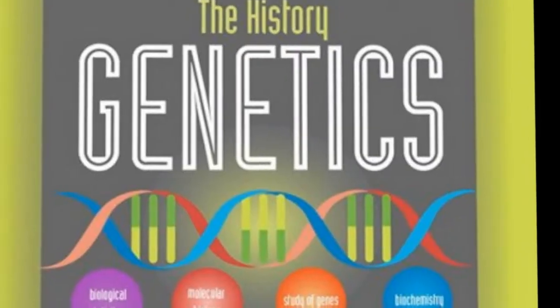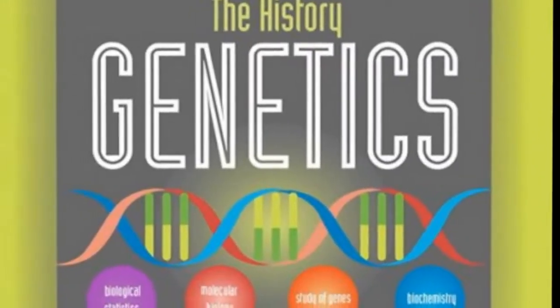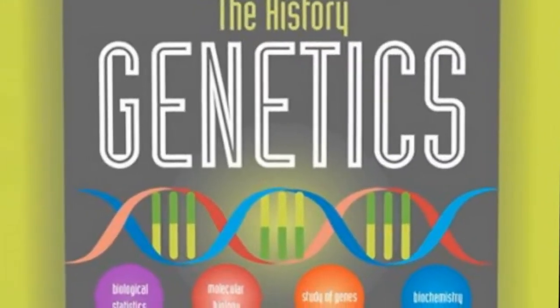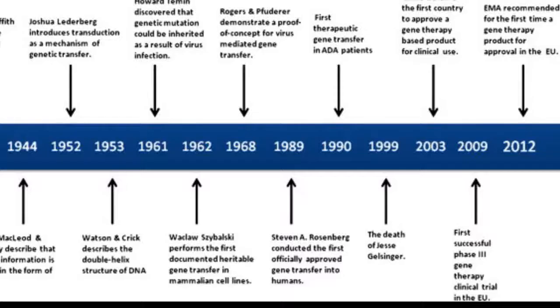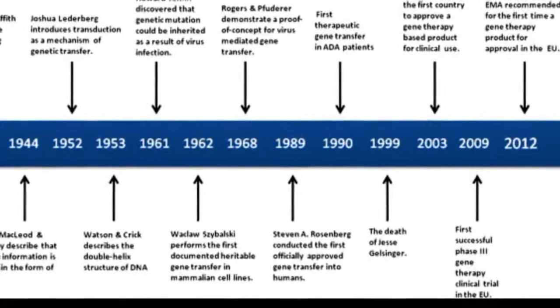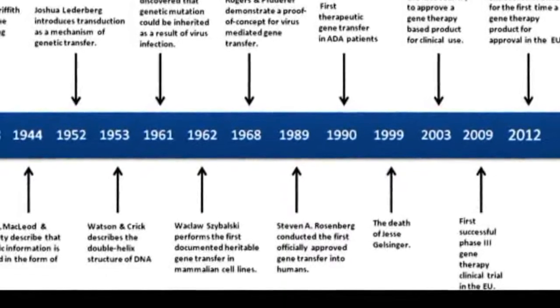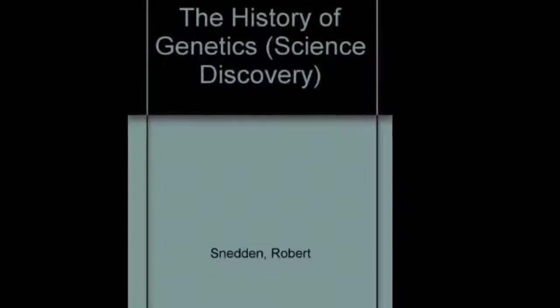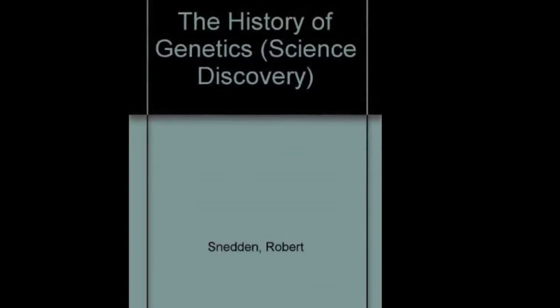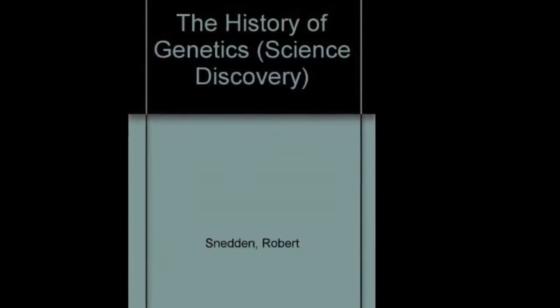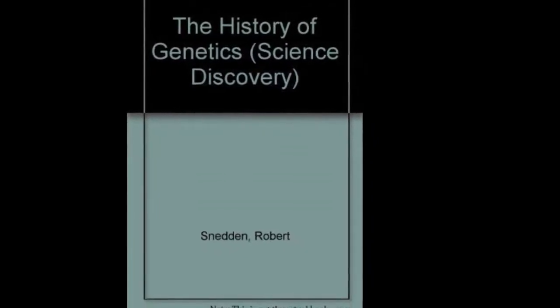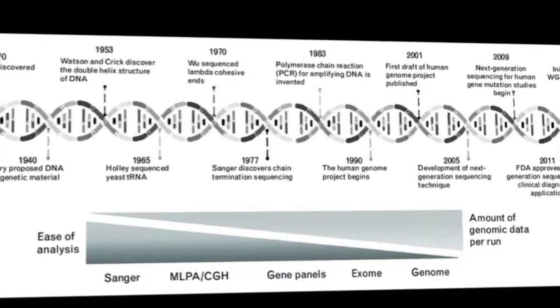In the 9th century CE, the Afro-Arab writer Al-Jahiz considered the effects of the environment on the likelihood of an animal to survive. In 1000 CE, the Arab physician Abu al-Qasim al-Zahrawi was the first physician to describe clearly the hereditary nature of hemophilia in his Al-Tasrif. In 1140 CE, Judah Halevi described dominant and recessive genetic traits in the Kuzari.